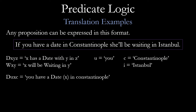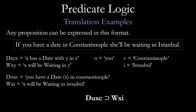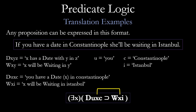DXYZ means 'X has a date with Y in Z,' so DUXC means 'you have a date X — an unspecified X — in Constantinople.' Then WXI means 'X will be waiting in Istanbul.' Notice that X appears in both parts of this proposition and refers to the same thing — it's important to keep track of that. One of the ways we do that is by using a quantifier: there is an X such that you have a date X in Constantinople, and therefore that same X will be waiting in Istanbul.